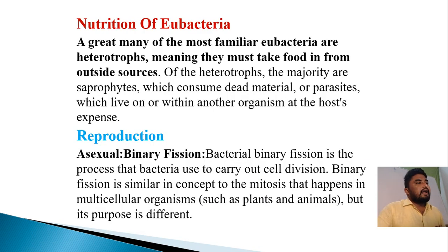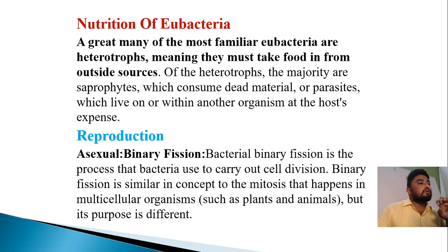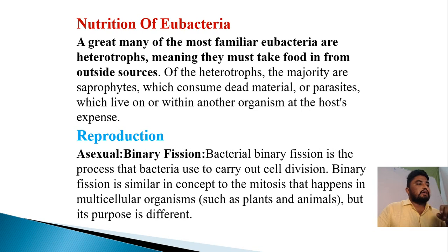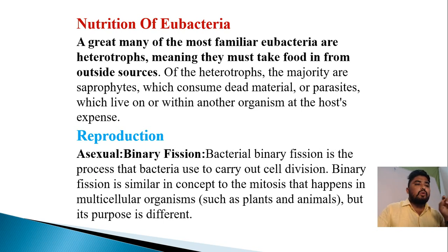The nutrition of eubacteria: a great many of the most familiar eubacteria are heterotrophs, meaning they must take food in from outside sources. Of the heterotrophs, the majority are saprophytes, which consume dead material, or parasites, which live on or within another organism at the host's expense. Asexual reproduction in bacteria is binary fission. Bacterial binary fission is the process that bacteria use to carry out cell division. Binary fission is similar in concept to mitosis that happens in multicellular organisms, but its purpose is different.